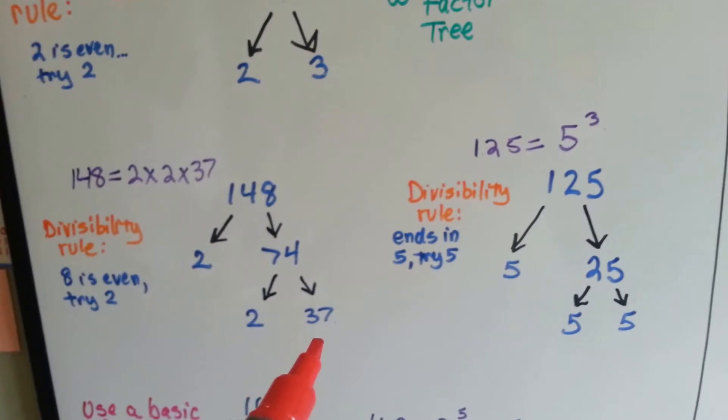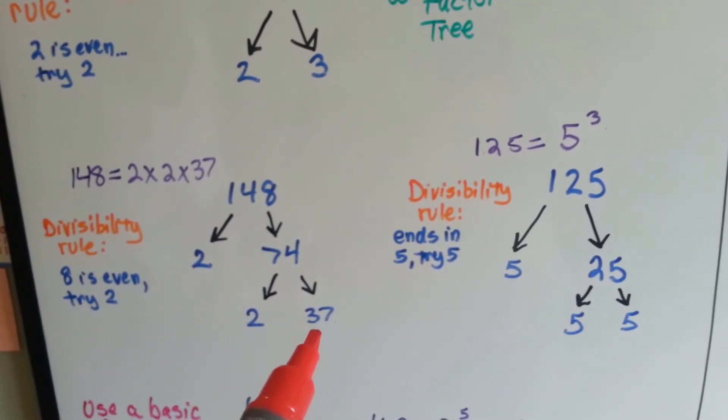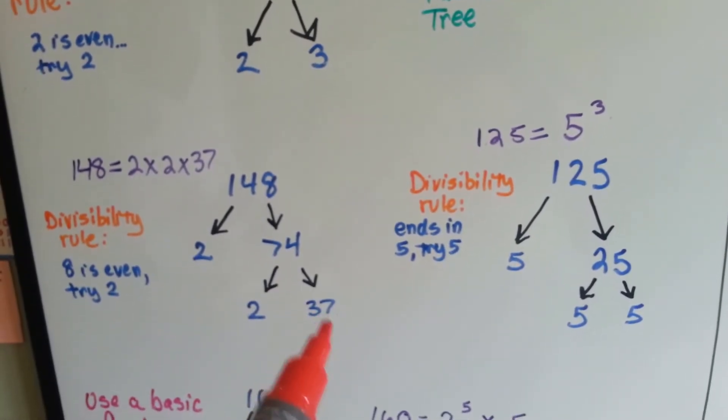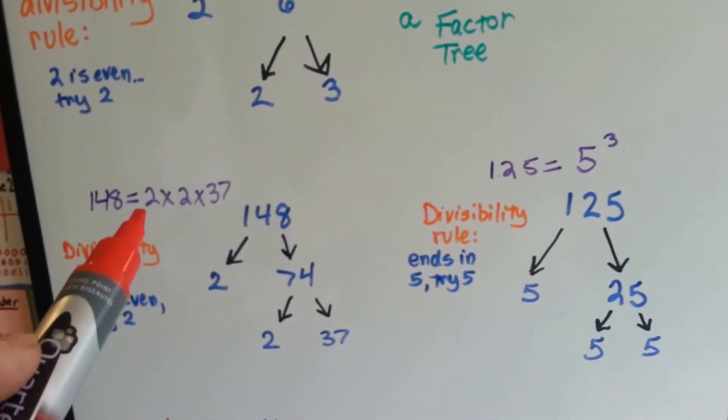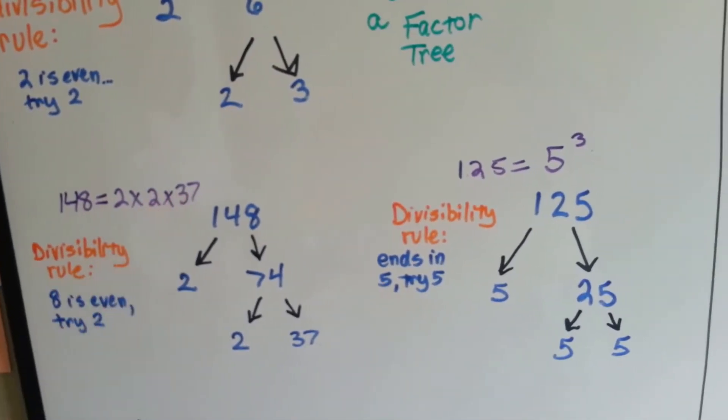And then is 37 the answer in the times table? No, it's not. 35 is, 36 is, but not 37, so that's done, it's prime. So the factorization for it is 2 times 2 times 37.